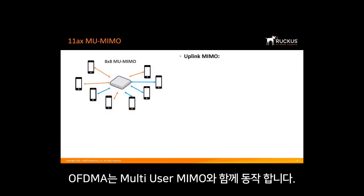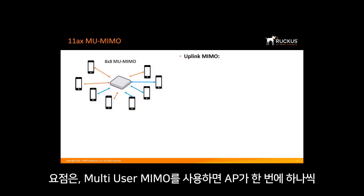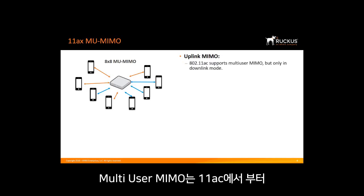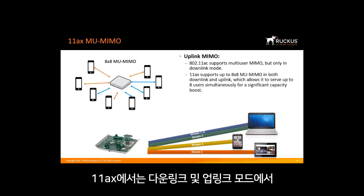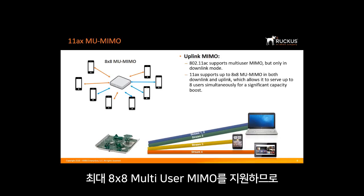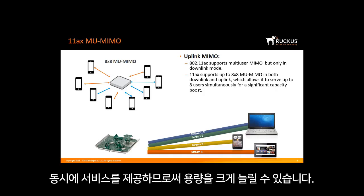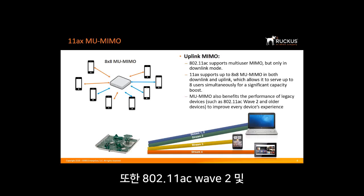OFDMA also works in tandem with multi-user MIMO. Multi-user MIMO allows an AP to address multiple devices simultaneously instead of one at a time sequentially. It was introduced in 11ac but only in downlink mode. 11ax supports up to 8x8 multi-user MIMO in both downlink and uplink modes, allowing it to serve up to 8 users simultaneously for a significant capacity boost. Multi-user MIMO also benefits legacy devices such as 802.11ac Wave 2 and older devices, improving every device's experience.